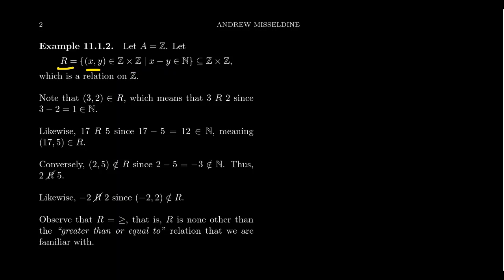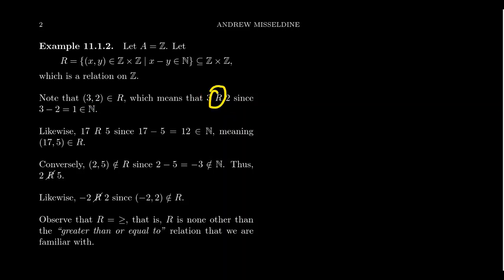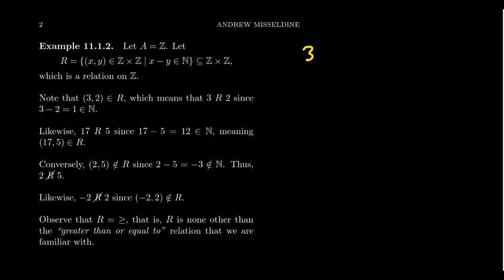Similarly, 17 is related to 5 because 17 minus 5 equals 12, a natural number, so the ordered pair (17, 5) belongs to R. However, be aware that order matters. For 5 minus 17, we get negative 12, which is not a natural number, so 5 is not related to 17. Even though 17 R 5, we have 5 not-R 17.